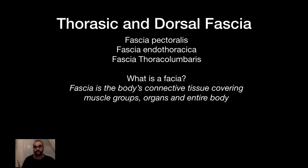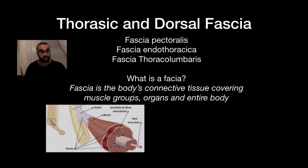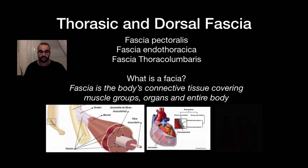Now let's go over to the thoracic and dorsal fascia. You have the fascia pectoralis and fascia endothoracica on the anterior side, and the fascia thoracolumbaris on the posterior side — that's the dorsal fascia, which also branches out on the anterior side. But first, what is a fascia? A fascia is connective tissue that covers muscle groups. On the inside, each muscle has different bundles. Fascia reduces friction when muscles contract and protects them, and also goes around organs and the entire body.